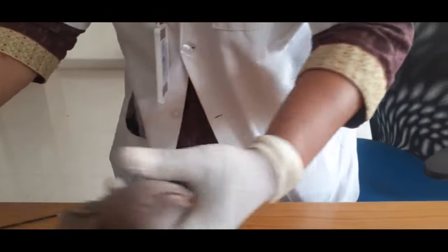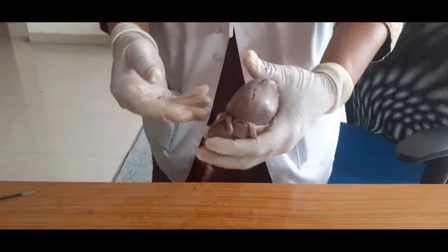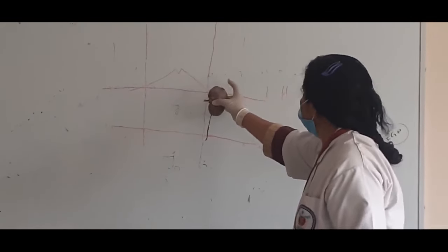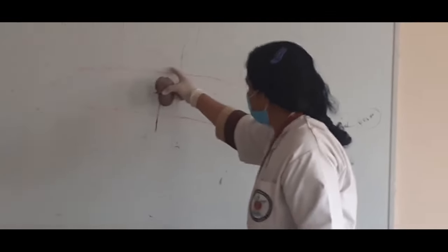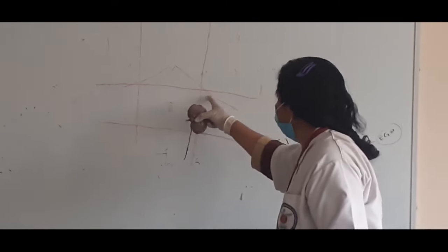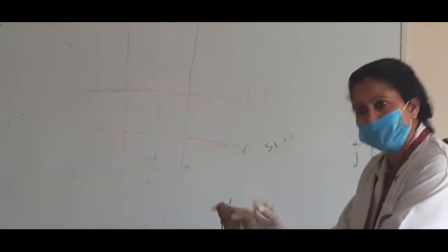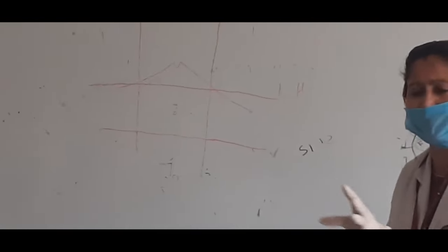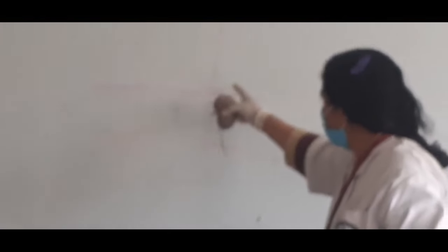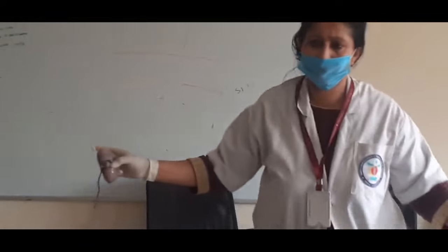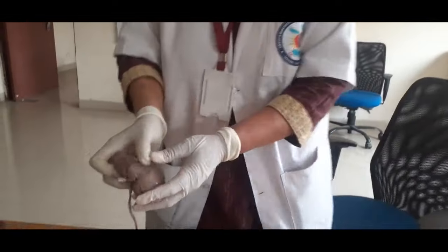Now coming to the kidney. The kidney lies in four quadrants: the hypochondriac, epigastric, umbilical, and lumbar regions.